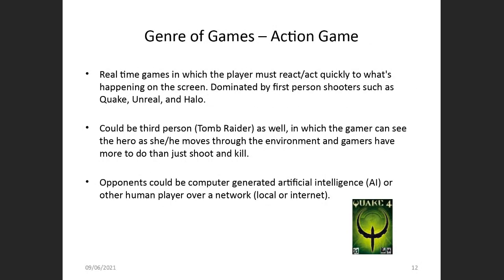Action games are real-time games in which the player must react quickly to what is happening on the screen. You have to attack or respond to attacks immediately — if you take too much time, you're out. They are normally first-person shooters like Quake and Unreal. It can also be third-person, like Tomb Raider, where the gamer sees the hero move through the environment, doing more than just shooting — climbing, jumping, opening things. Opponents can be computer-generated AI or other human players over a network.